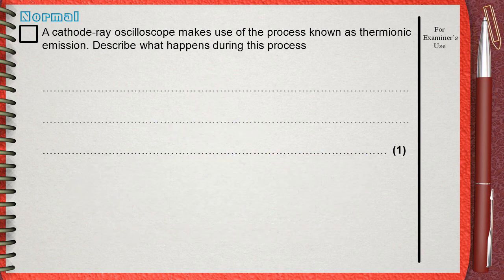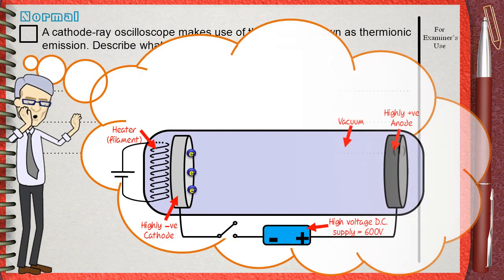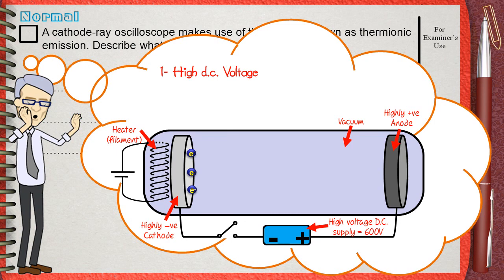Let's go quickly through the cathode ray tube and remember what thermionic emission is. You can see the components of the cathode ray tube that we have studied before. Three things must be provided to make the cathode ray tube work — to release electrons from the cathode and direct them towards the anode. The first thing is high DC voltage, about 600 volts between the cathode and the anode.